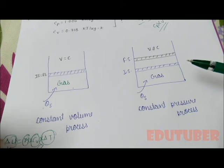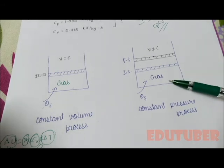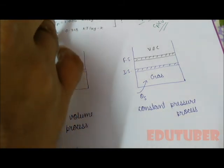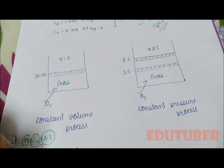In constant volume process, heat required is only to increase the temperature. But in constant pressure, when temperature increases, work is also required to be done on the system. So for increasing a single degree Celsius of temperature, we need more heat in constant pressure process. Hence, we can say CP is always greater than CV.